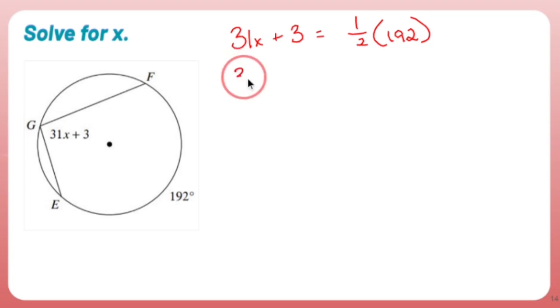31x plus 3 hasn't changed yet. Half of 192 is 96.